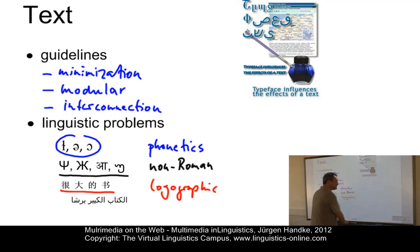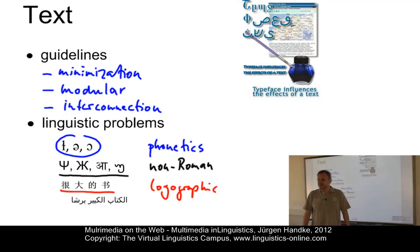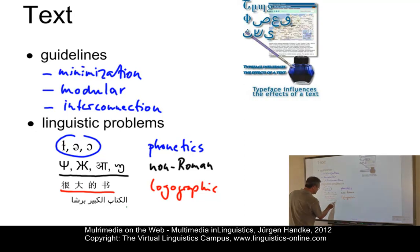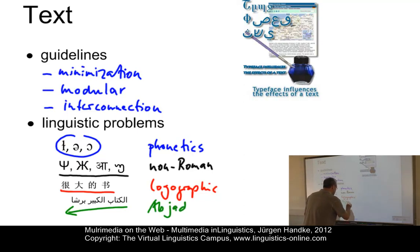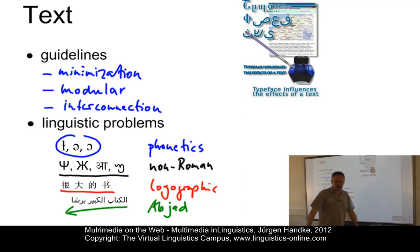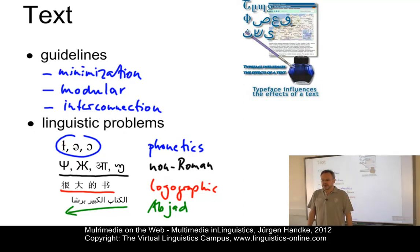These symbols have to be displayed in well-designed linguistic websites as well. And finally, we have characters whose orientation is not from left to right but from right to left — the Abjad writing system used in Arabic is an example here.